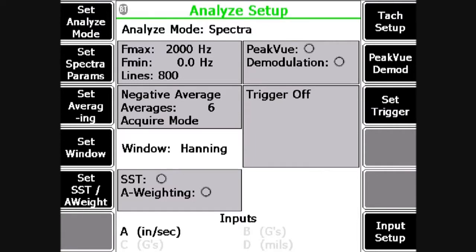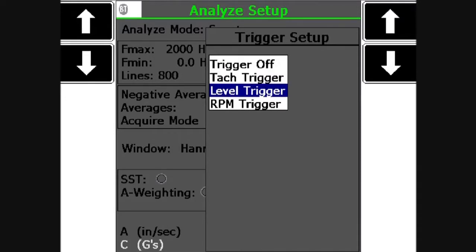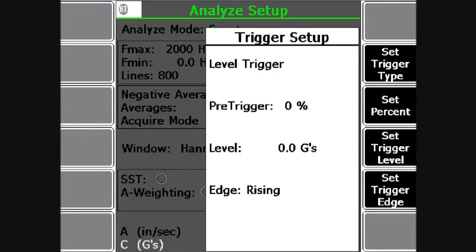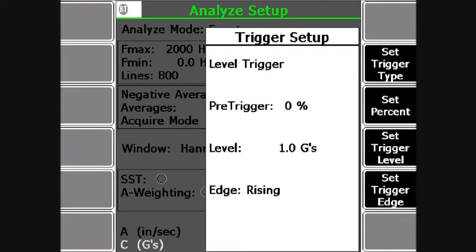Then I'm going to come over and set a trigger by pressing F9, set trigger. I'm going to arrow down to level trigger, and I'm going to put the trigger level, F10, at 1G. Press enter and press enter.